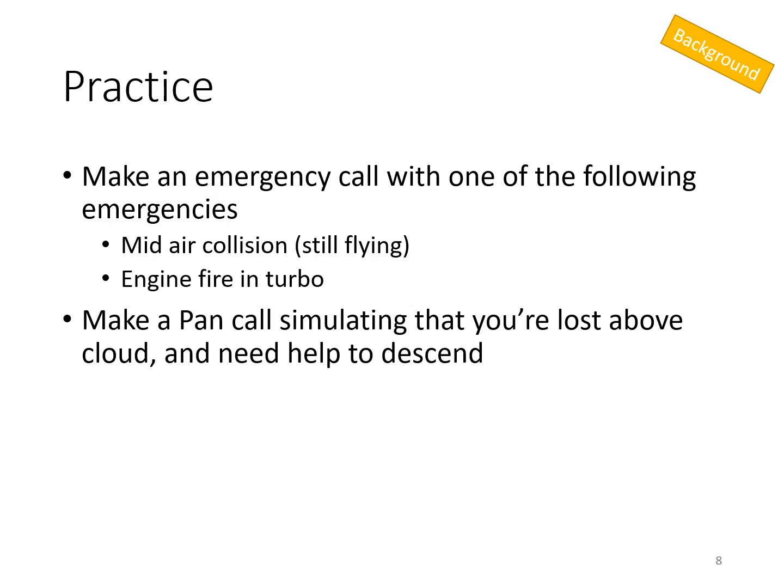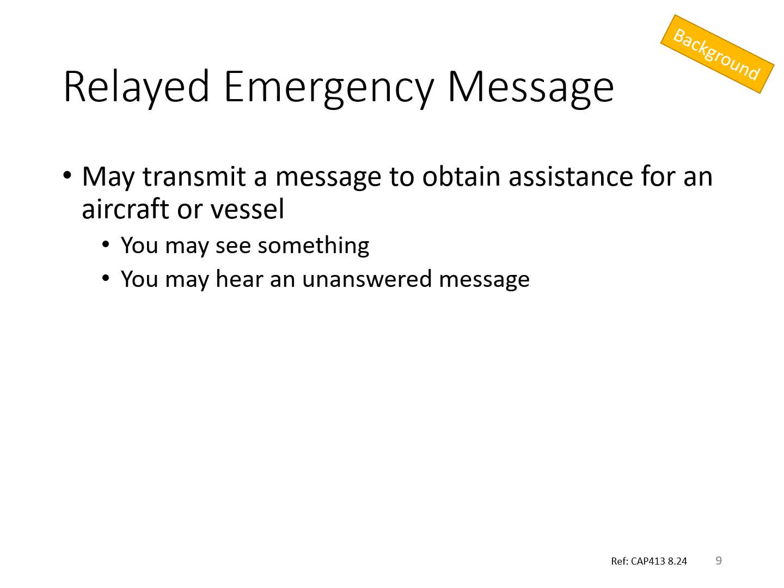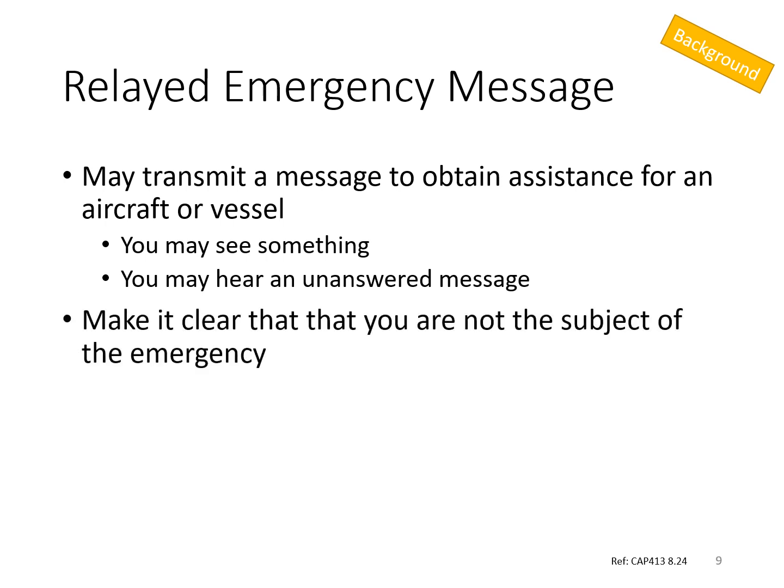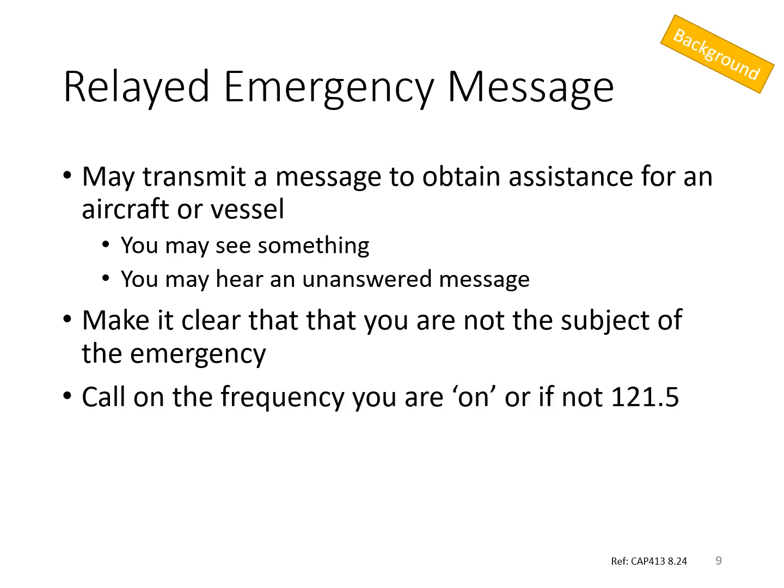Time for practice. Make an emergency call with one or both of the following emergencies: either a mid-air collision which has left you still flying, or you're in a turbo and you have an engine fire. It is also possible to make an emergency call about someone else's emergency — for example, if you see a mid-air collision or if you hear an emergency transmission that is unanswered. When you call, make it clear that you're not the subject of the emergency. You could call on the frequency that you're on or on 121.5. So if you're on one of the gliding frequencies and you hear a Mayday, you should relay the details to London Centre on 121.5. Doing your best to write them down first would probably be helpful.